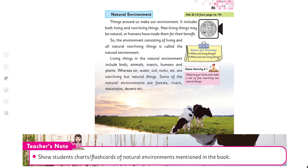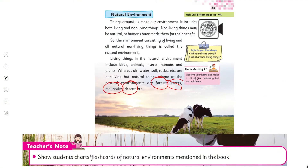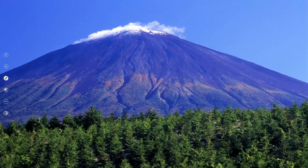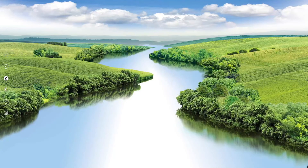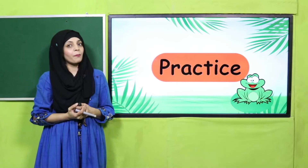Now let's look at some flashcards of natural environments. Here you can see a grassland, mountains, and a forest with lots of trees — this is all natural. Here you can see a river, grass, lots of trees, plants, and some mountains. This is also a natural environment.